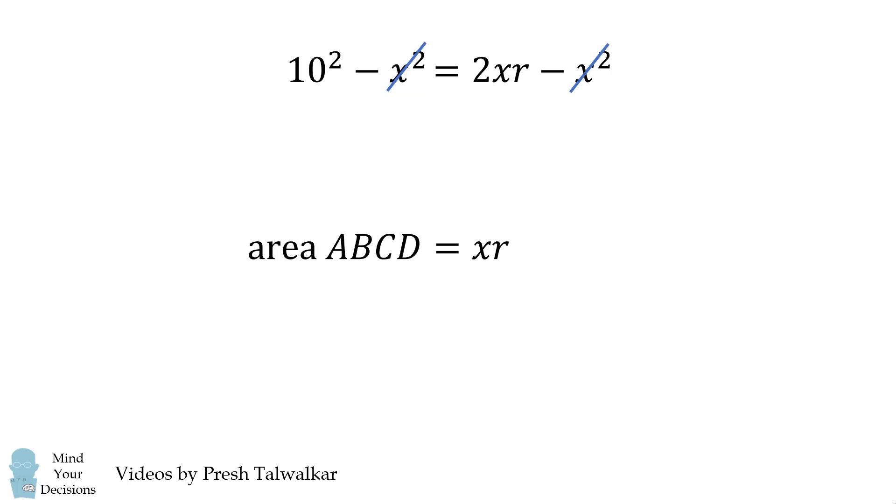In this equation, the negative X squared terms will cancel out. So we get 2XR is equal to 10 squared. We then divide both sides by 2 and we solve that XR is equal to 50. And that's the area of the rectangle.